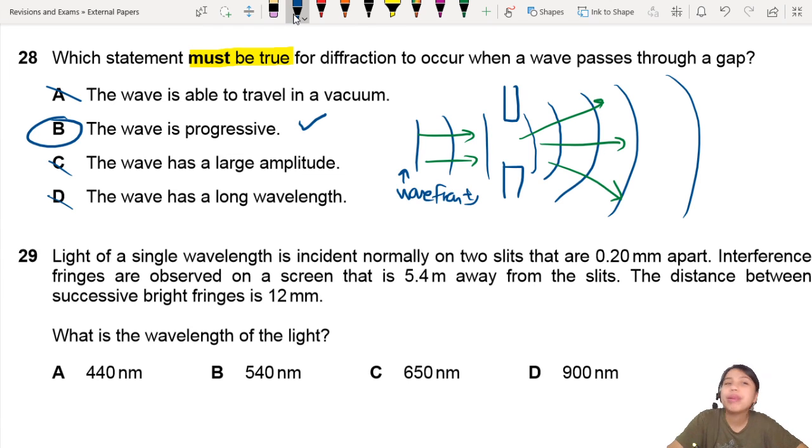So, nah, B is the best choice for this one. Okay, that is a must-be-true for diffraction to occur. Next question, next video. Okay.